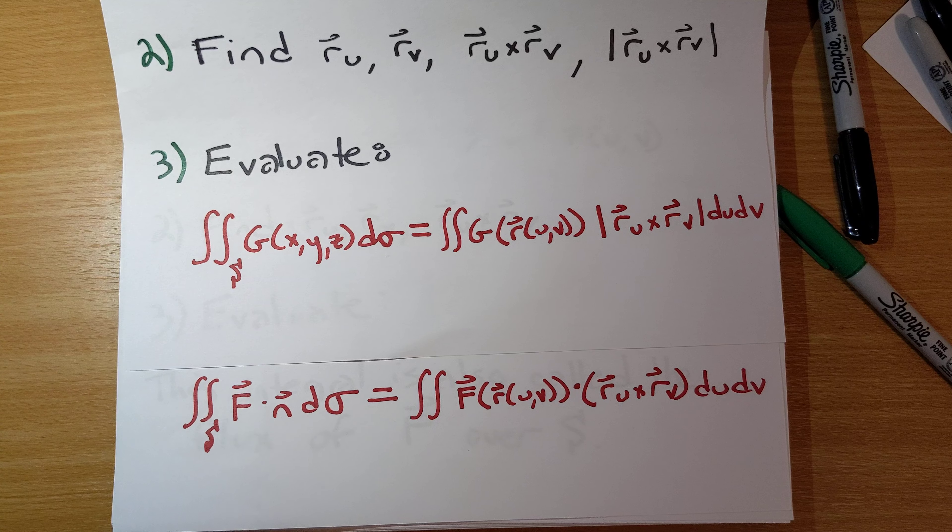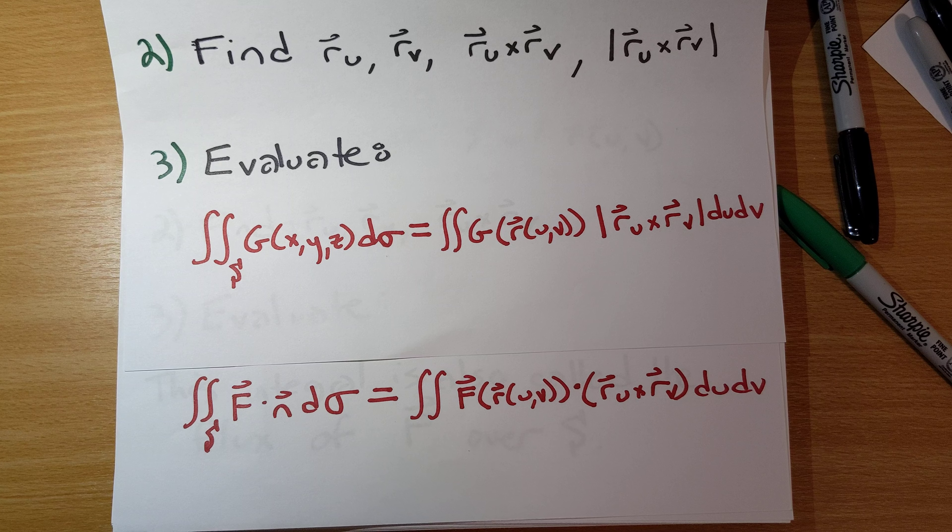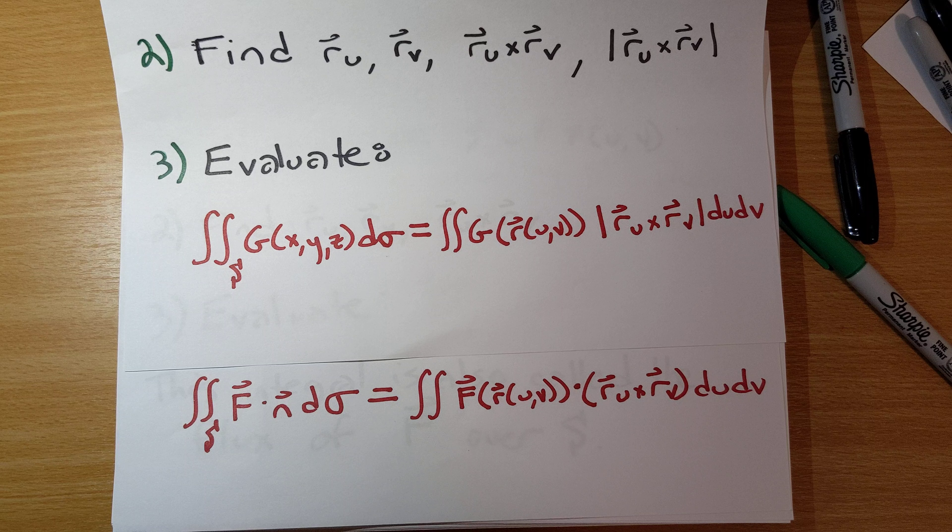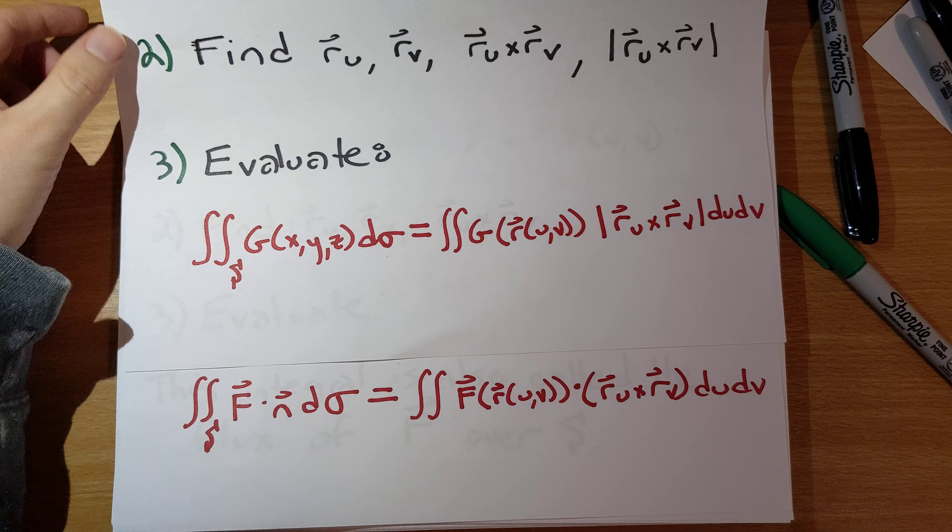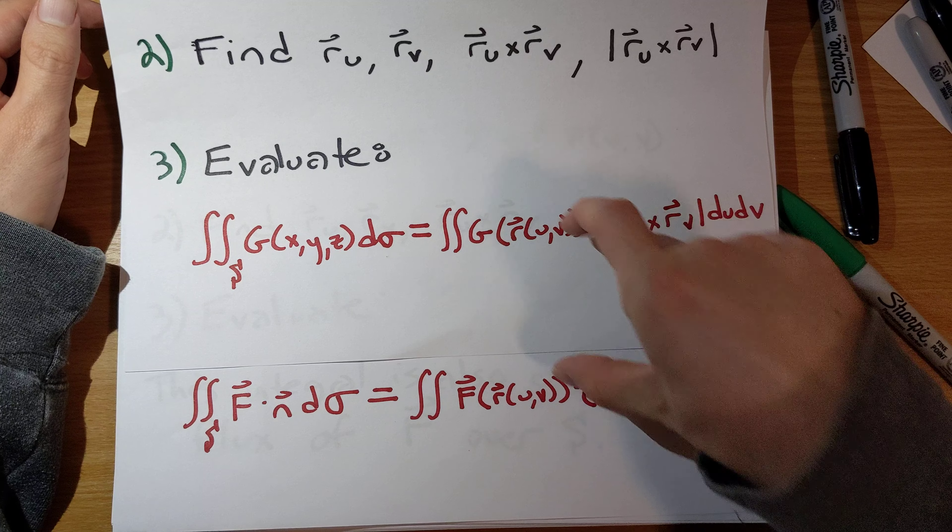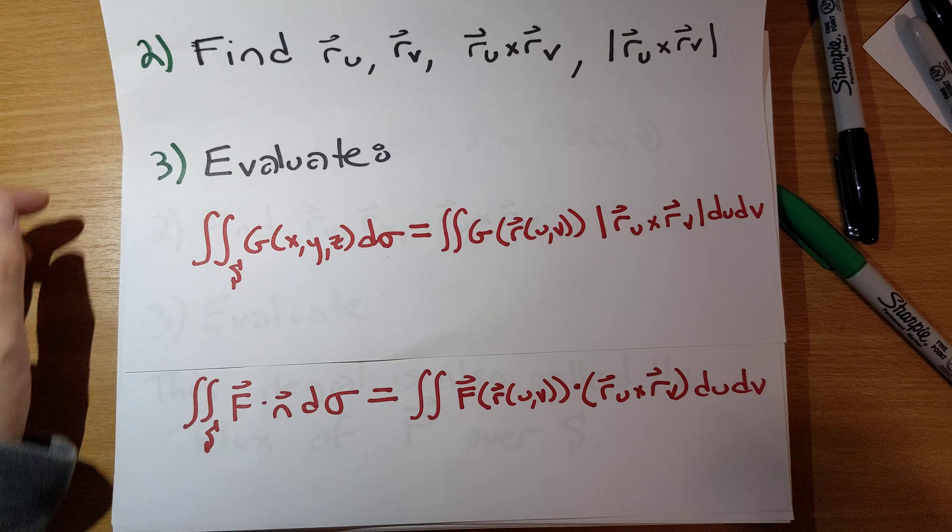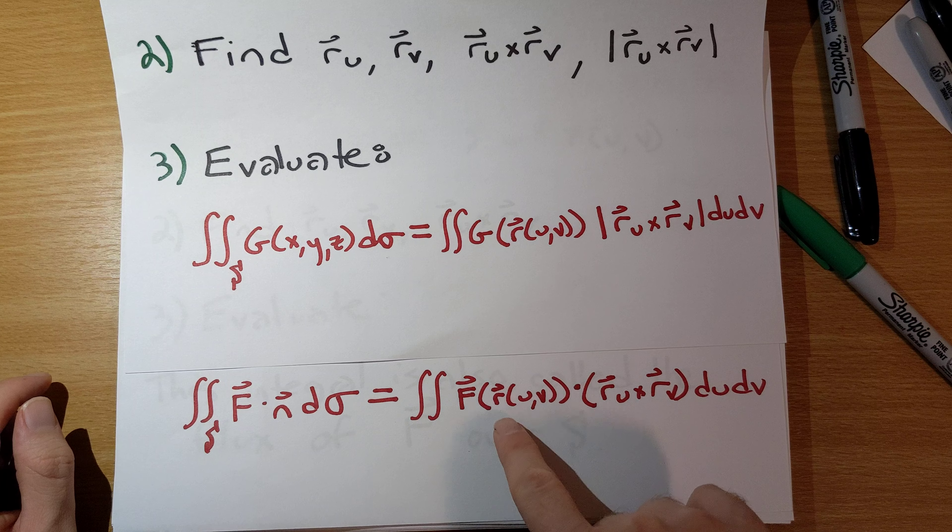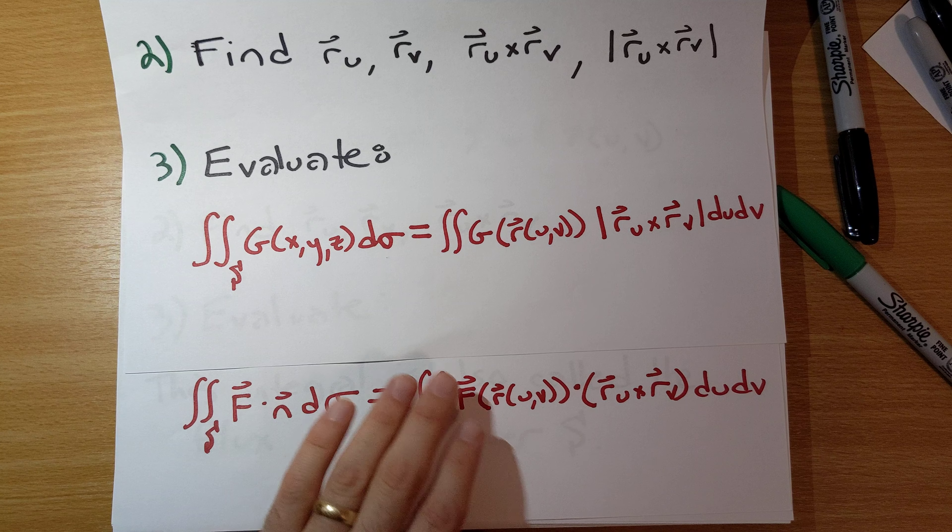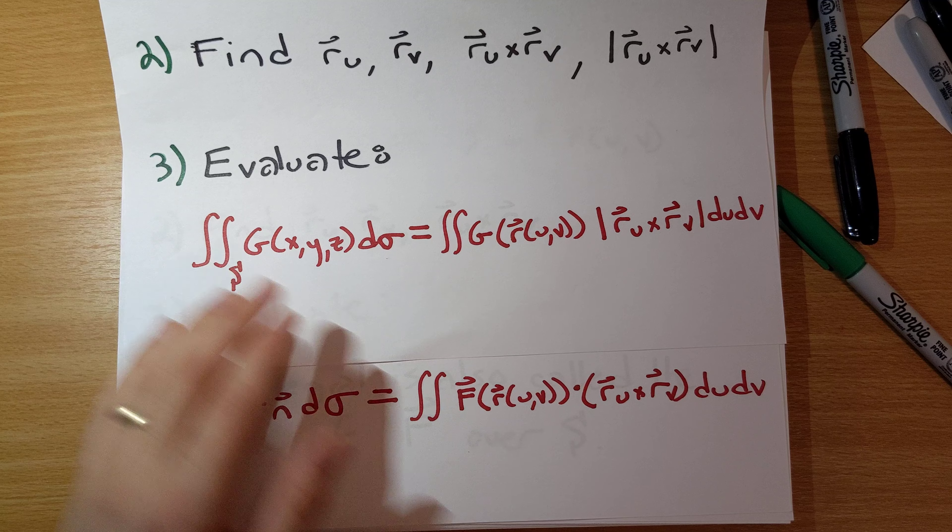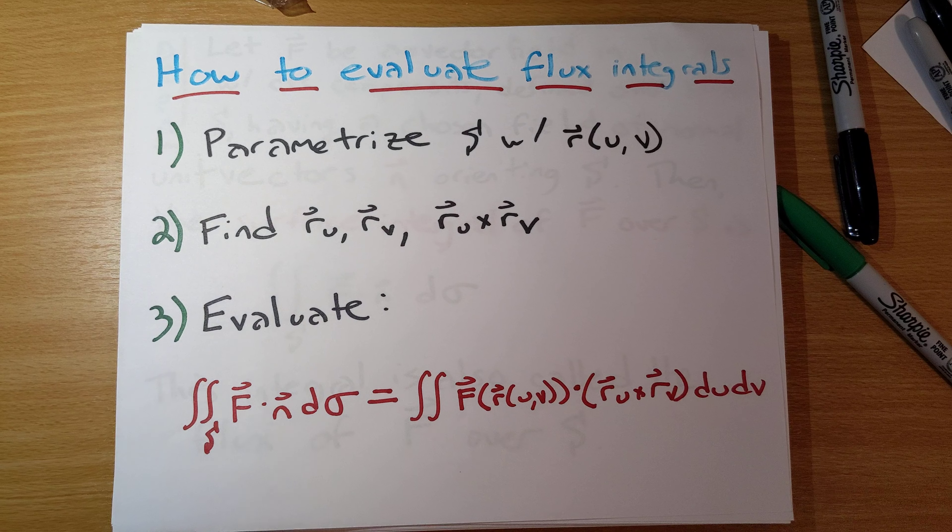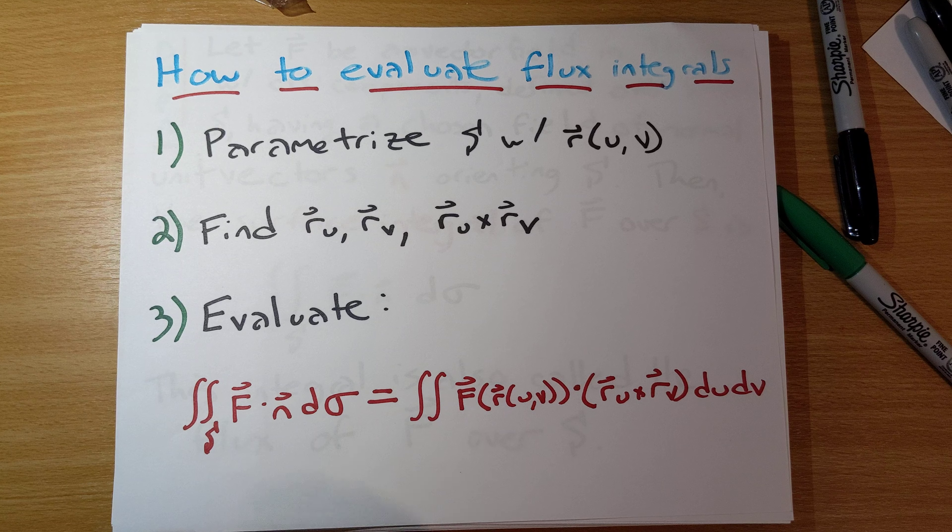This should feel just like the discussion in section 16.1 and 16.2: scalar line integrals and vector line integrals. In both of them, you have to parametrize the curve that you're integrating along and substitute in your parametrization to the function you're integrating. In the vector line integrals, you did the dot product with r prime of t. In the scalar line integral, you multiply by the magnitude of r prime of t. So in both of those, the situation is very much parallel.